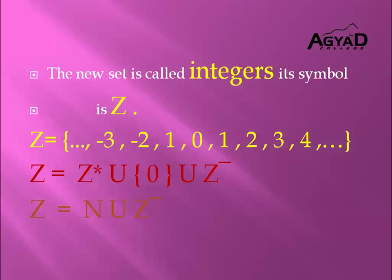There are many problems with the two sets of counting numbers and natural numbers. For example, how can I measure the depth of a submarine under the sea level? Also, how can I find the temperature in Moscow, which is always below 0? So, we have to find another set of numbers which is bigger than natural numbers and counting numbers. This new set is called integers.